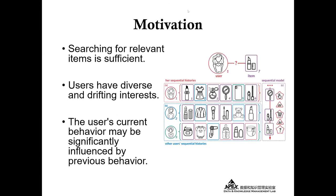Next, I will describe the motivations from which the model design comes. The figure on the right is a perfect example of these motivations. First, we believe that information about relevant items is sufficient in predicting users' interests without using the full historical sequence. For example, if a user wants to buy a lipstick, information about her historical cosmetic purchases is obviously more valuable than information about her cell phone purchases.